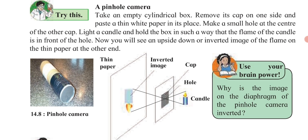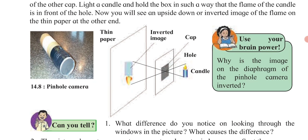To make a pinhole camera, take an empty cylindrical box, remove its cap on one side, and paste a thin white paper on that end. Make a small hole at the center of the cap. Light a candle and hold the box so that the flame is in front of the hole. You will see an upside-down image formed on the thin paper at the other end — this is the inverted image formed by the pinhole camera.